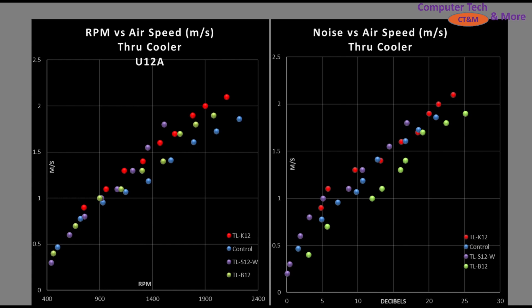The left graph shows airspeed (vertical) versus RPM (horizontal)—a blade efficiency graph. The TLK12 is sitting right in line with the S12 and the B12, slightly outperforming my control fan, which is again based on three parts A12X25 to one part A14.